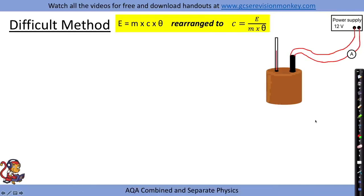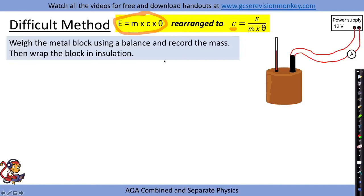This method for measuring specific heat capacity doesn't use a joule meter, but many of the steps are the same. We still use E = mcθ rearranged to calculate specific heat capacity. We still weigh the metal block on a balance to record mass, wrap the block in insulation, and place a thermometer in the block to measure the temperature before heating.